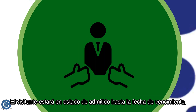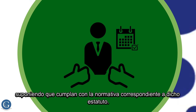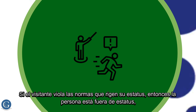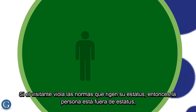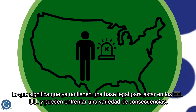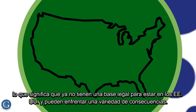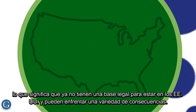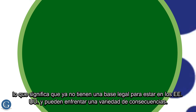The visitor will remain in the admitted status until the expiration date, assuming that they comply with the regulations pertaining to that status. If the visitor violates the regulations that govern their status, then the person is out of status, which means that they no longer have a lawful basis for being in the US and a variety of consequences may be faced.